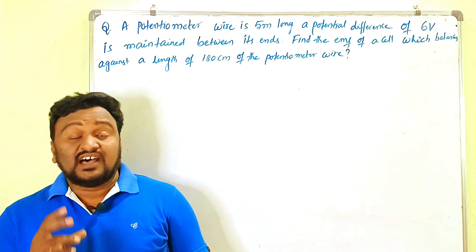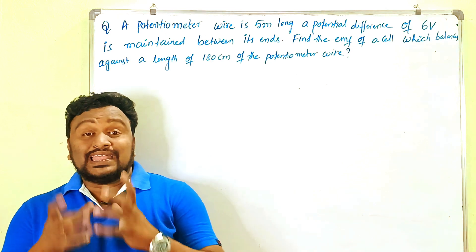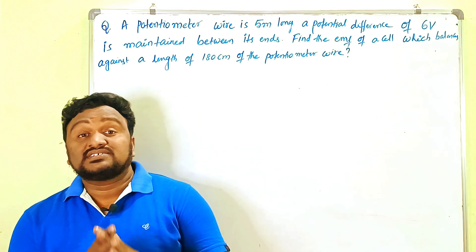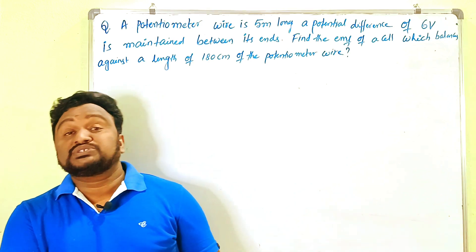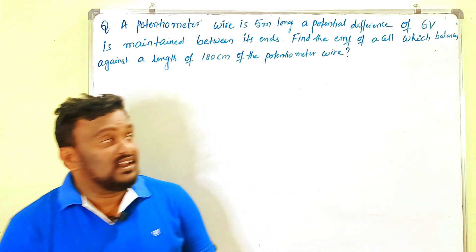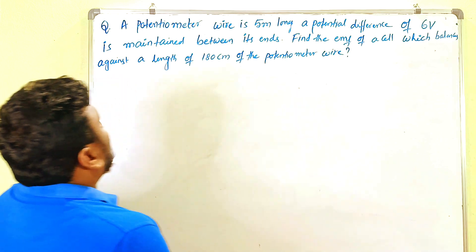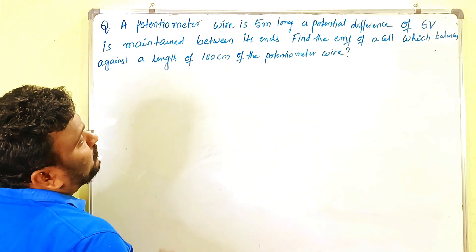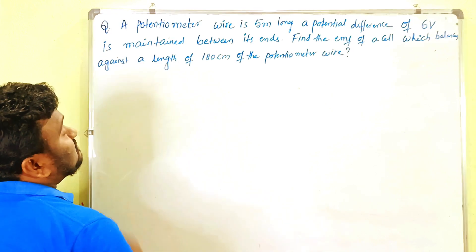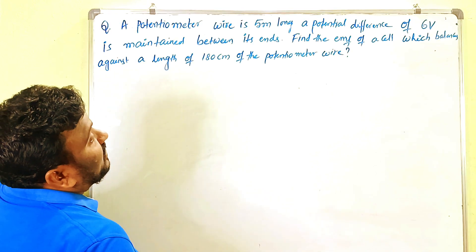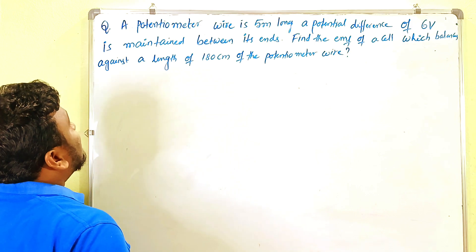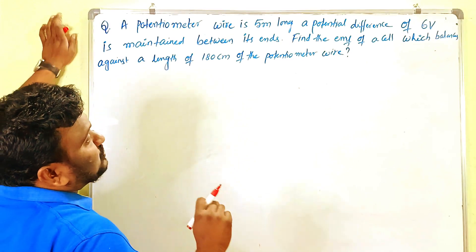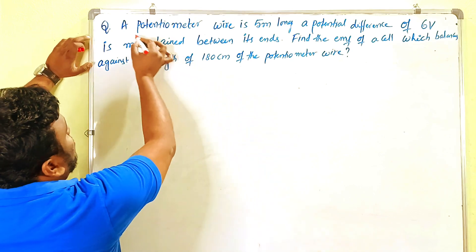Dear friends, this is another problem regarding the eight marks long answer combination problem, specially on the topic of potentiometer. A potentiometer wire is five meters long. A potential difference of six volts is maintained between the ends. Find the EMF of a cell which balances against the length of 180 centimeters of the potentiometer wire.